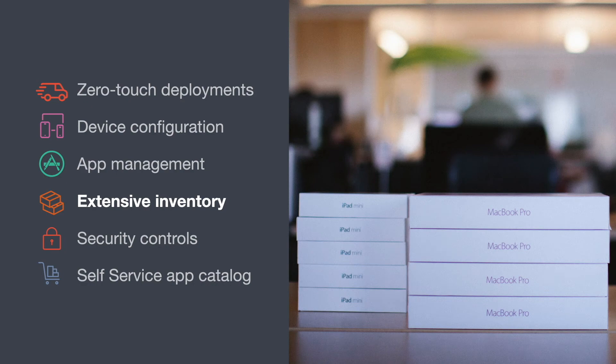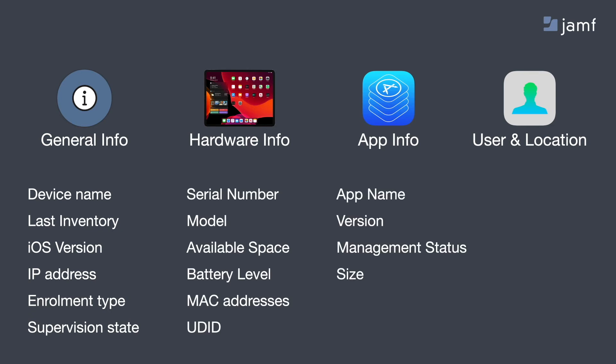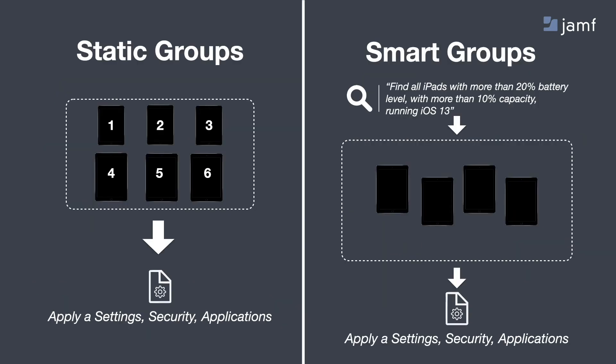Now let's gather some inventory data and make our lives easier with some automations. Out of the box, Jamf collects a wide range of inventory data — including the device name, IP address, iOS version, serial number, device model, and what apps are installed. Once integrated with an LDAP service or a cloud identity provider like Azure, you can automatically populate information to identify who has which device. From there, you can build various groups. Jamf has two ways of creating groups: Static Groups, where you manually add devices, and Smart Groups, where you specify criteria and Jamf automatically finds the devices that fit.